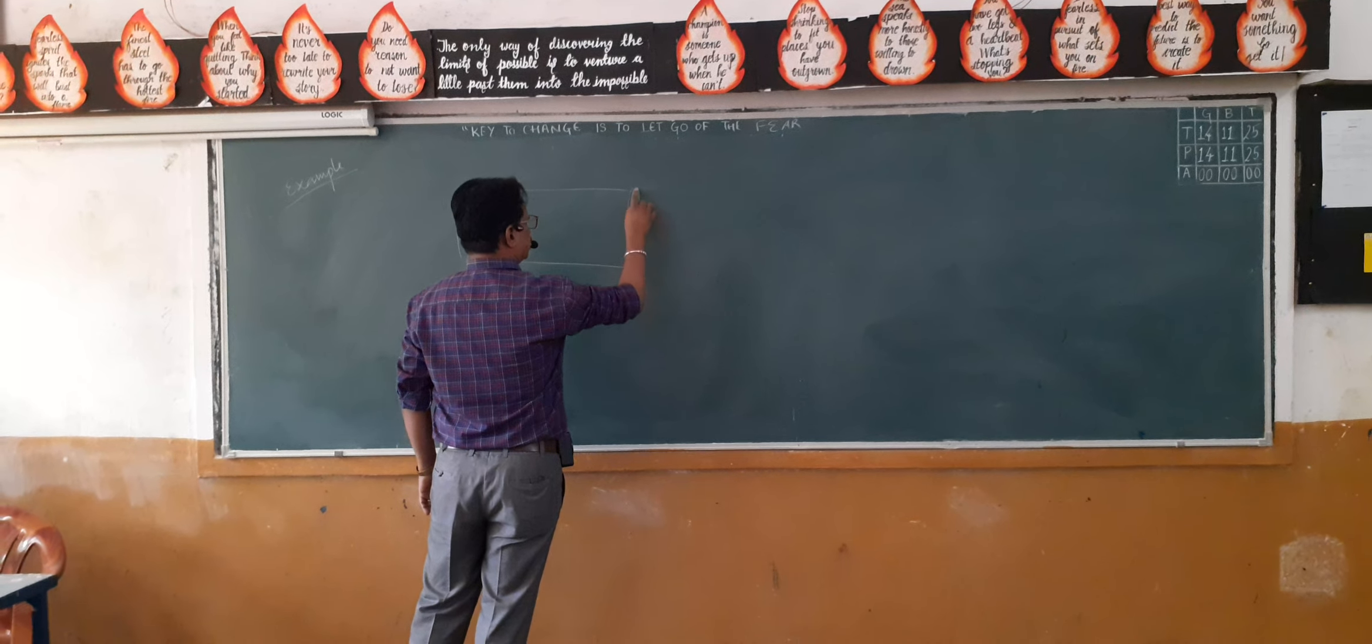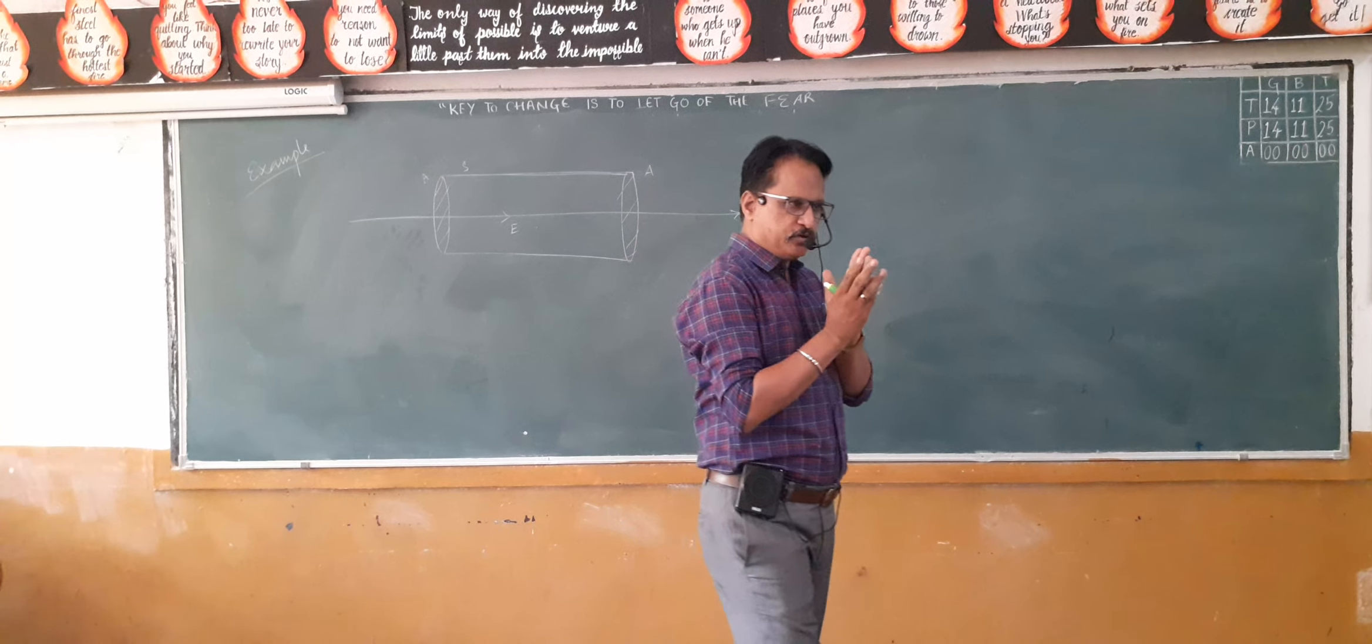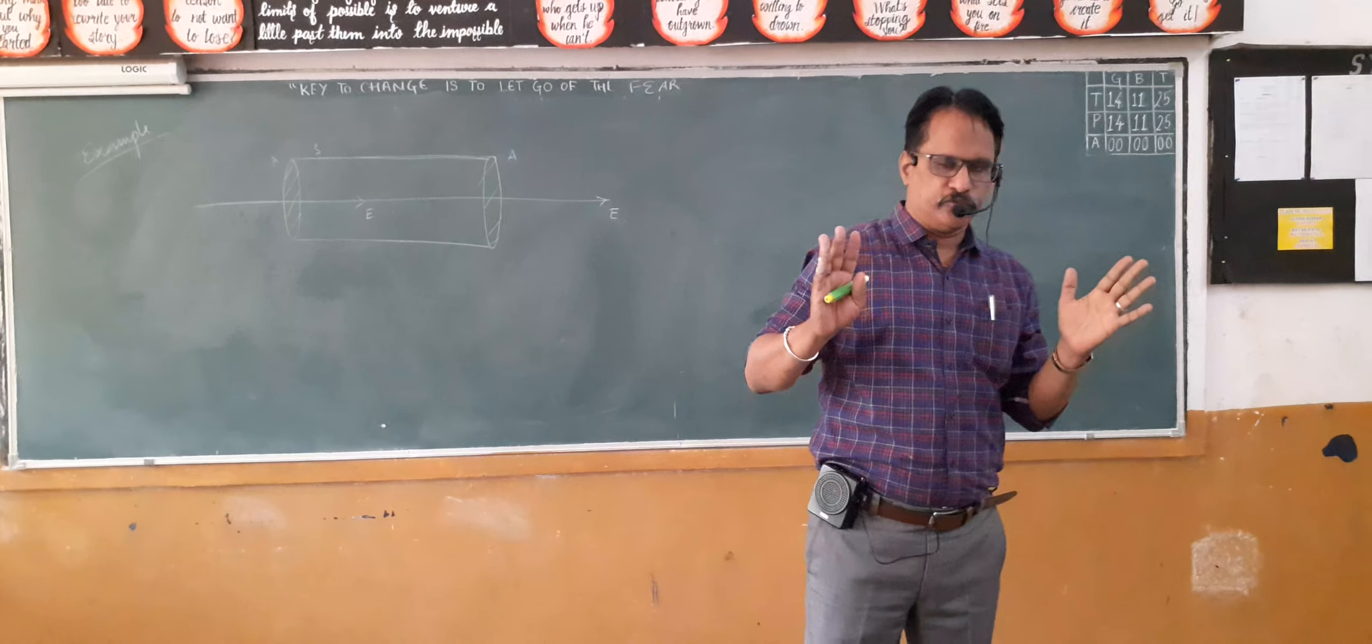So first of all, I want to calculate flux entering the left face of the cylinder. Here, normal is always drawn outwards - that is the general common sense. The normal unit vector is always to be taken outwards.